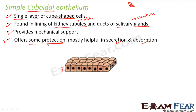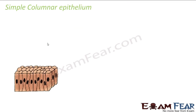So now you understand how each type of epithelium has a specific purpose. The main purpose of simple squamous epithelium is passage of materials. For simple cuboidal epithelium, the main purpose is absorption and secretion.